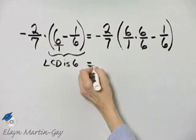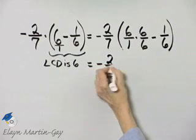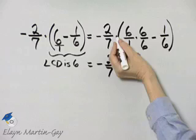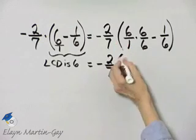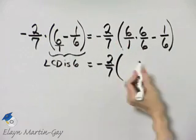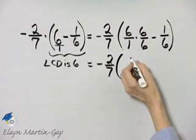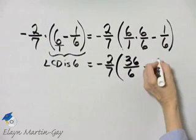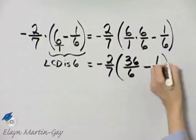Let's see what we have then. We have negative 2/7 times, and this is multiplication with or without the multiplication dot. I have 6 times 6 is 36 over 6 minus 1 over 6.